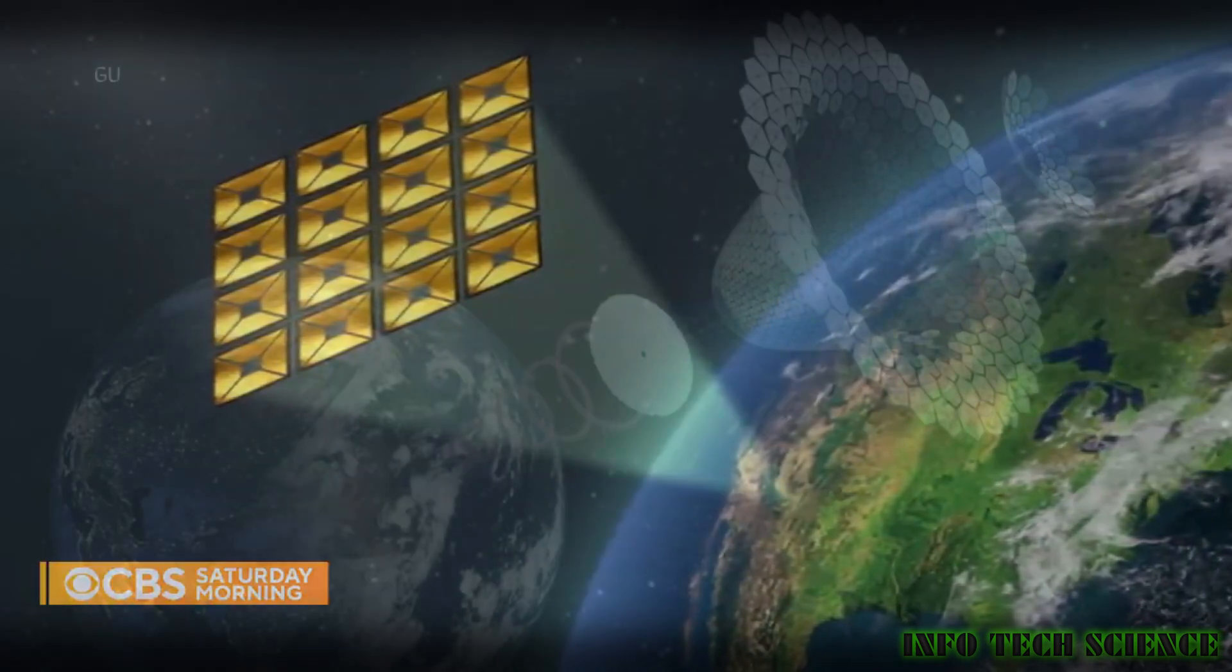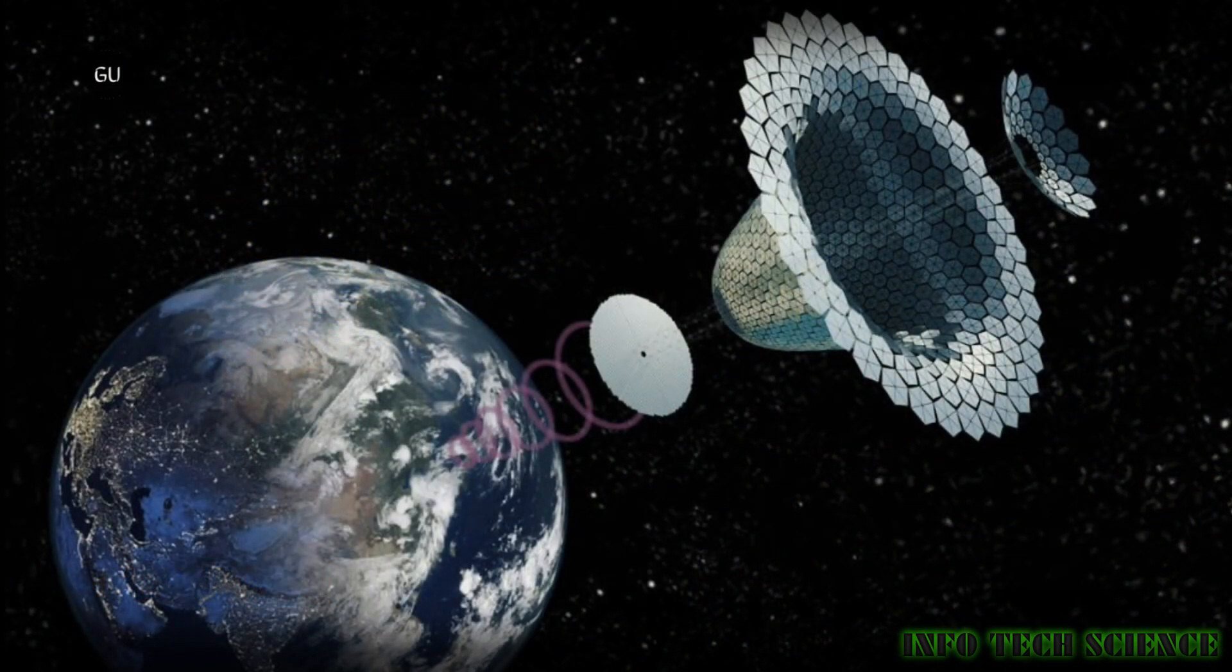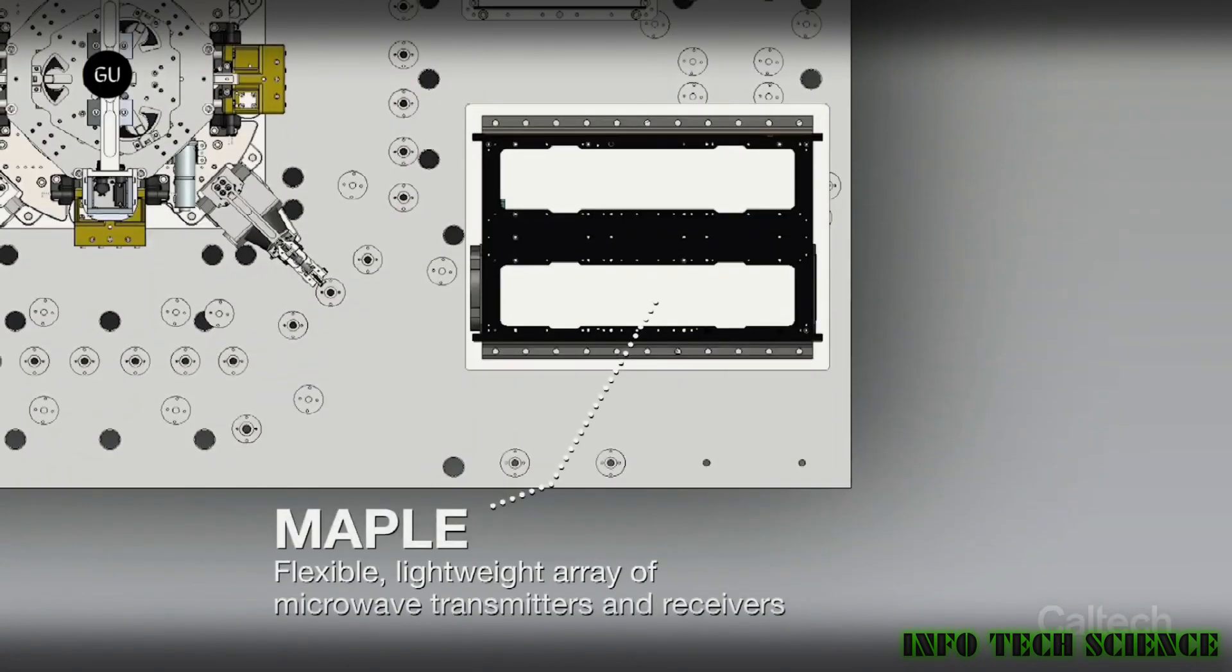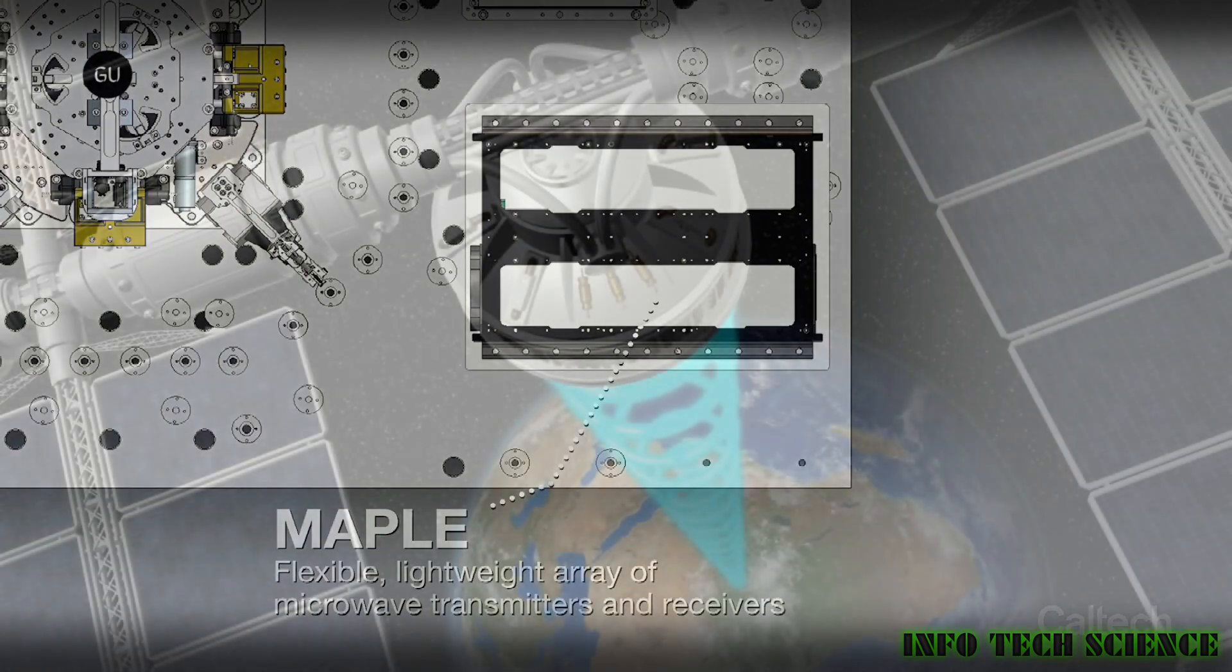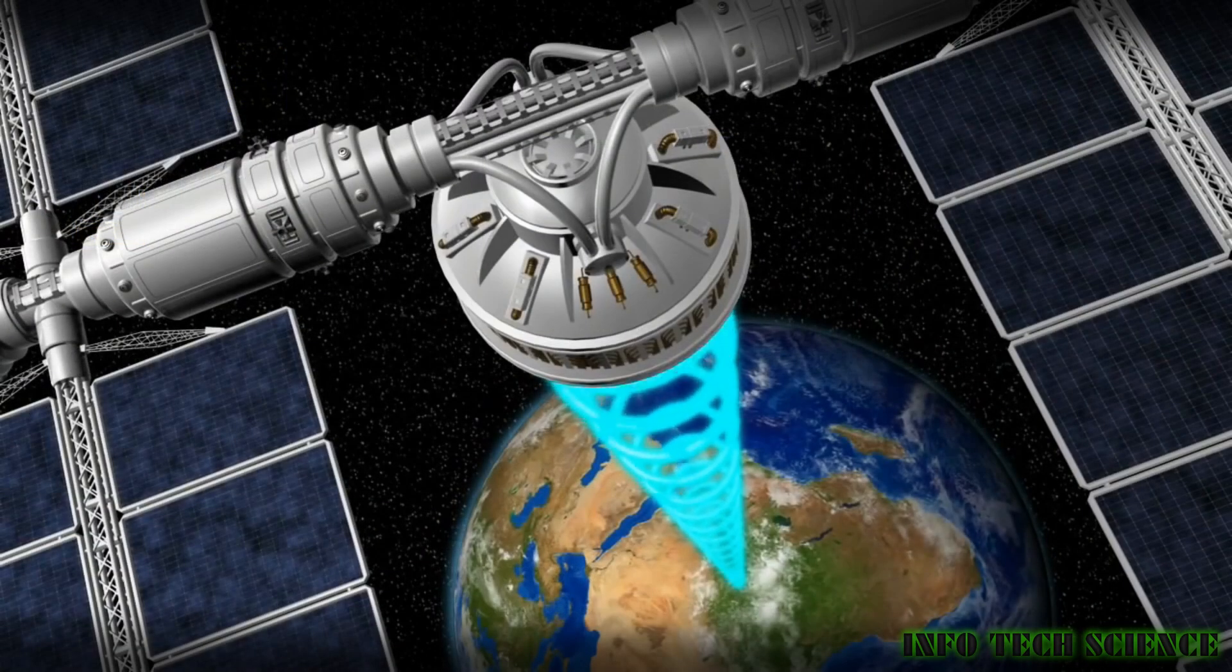The wireless power transfer was achieved by the Microwave Array for Power Transfer Low Orbit Experiment, MAPLE, an array of flexible and lightweight microwave power transmitters which is one of the three instruments carried by the space solar power demonstrator.